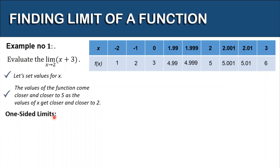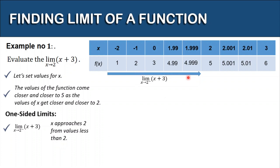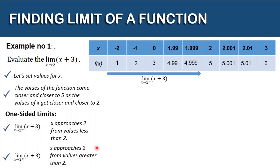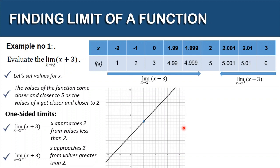Now we will discuss the one-sided limits. The first one-sided limit is the limit of the function x plus 3 as x approaches 2 from the left — the negative superscript indicates that x approaches 2 from values less than 2, which we can see on the left side of 2 in our table of values. The other one-sided limit uses a positive superscript, indicating x approaches 2 from values greater than 2. We can see that the values of our function get closer and closer to 5 as x gets closer and closer to 2.